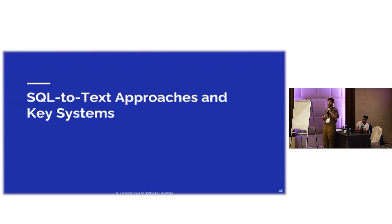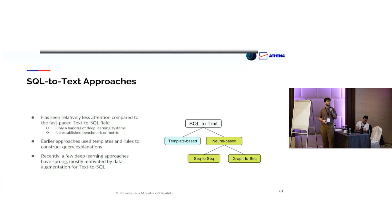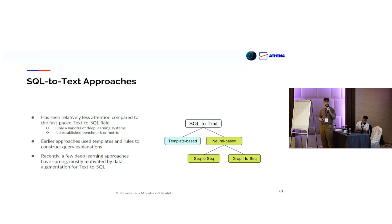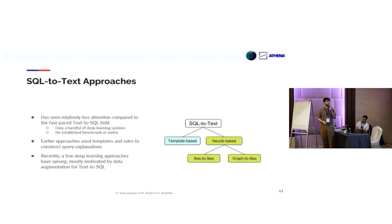Let's look at some approaches and systems in the SQL-to-text field. This is a problem that has seen relatively little attention compared to text-to-SQL. We have earlier template-based approaches that do not use deep learning, and we will mostly focus on neural-based approaches separated into two categories: sequence-to-sequence architecture and graph-to-sequence architecture. Even for deep learning systems we only have a handful of approaches, but more systems are starting to appear lately, mostly motivated by data augmentation efforts for the text-to-SQL problem.